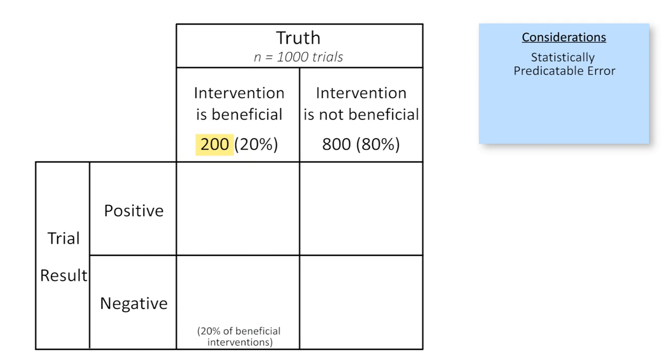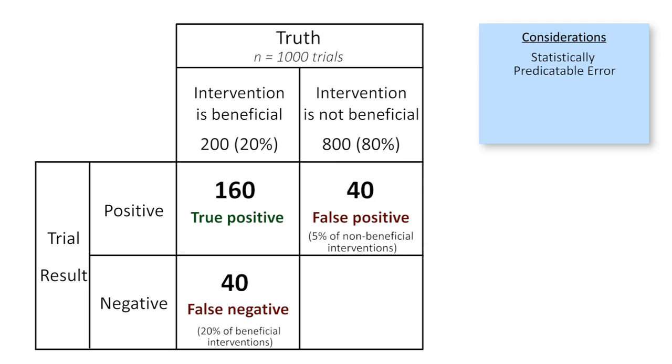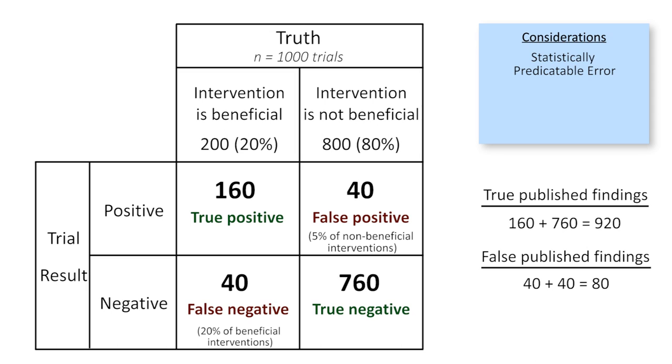Now let's look at the 800 false hypotheses. By setting a p-value of 0.05 as the threshold to declare a result to be statistically significant, we are saying that of the 800 false hypotheses, 5% of them will be false positives in this box, which is 40, and the remaining 760 are left here in the true negative box. If publication bias didn't exist, we could imagine that all 1,000 of those trials get published. This results in 920 true published research findings and 80 false published research findings. So if we ignore publication bias, systematic bias, and conflicts of interest, and only consider statistically predictable error, approximately 92% of published research findings would be true. That probably feels pretty reasonable.